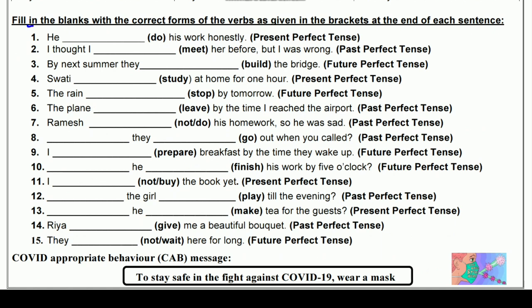अब उसी के base पर exercise है — Fill in the blanks with the correct forms of the verbs as given in the brackets at the end of each sentence। पहला sentence: He ___ his work honestly (do) — Present Perfect में change करना है। He के साथ 'has' आएगा, और do की third form 'done' होती है — do, did, done। तो: He has done his work honestly।